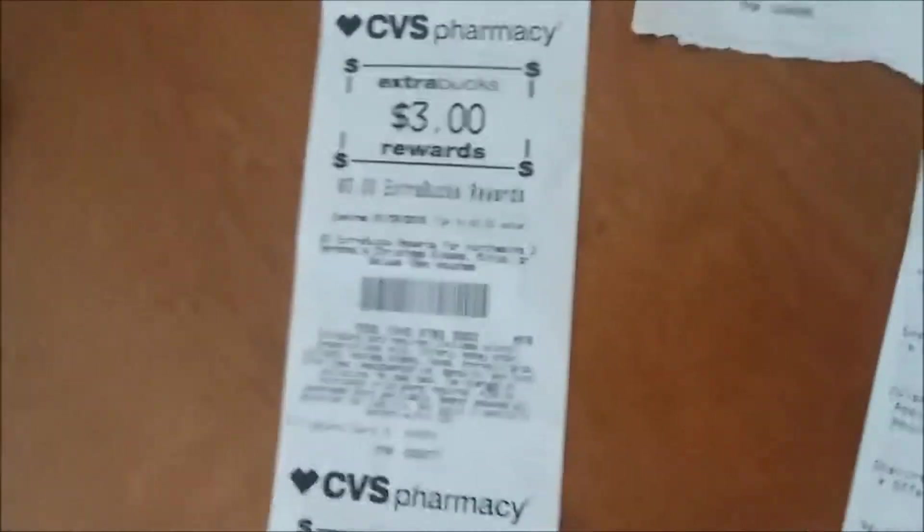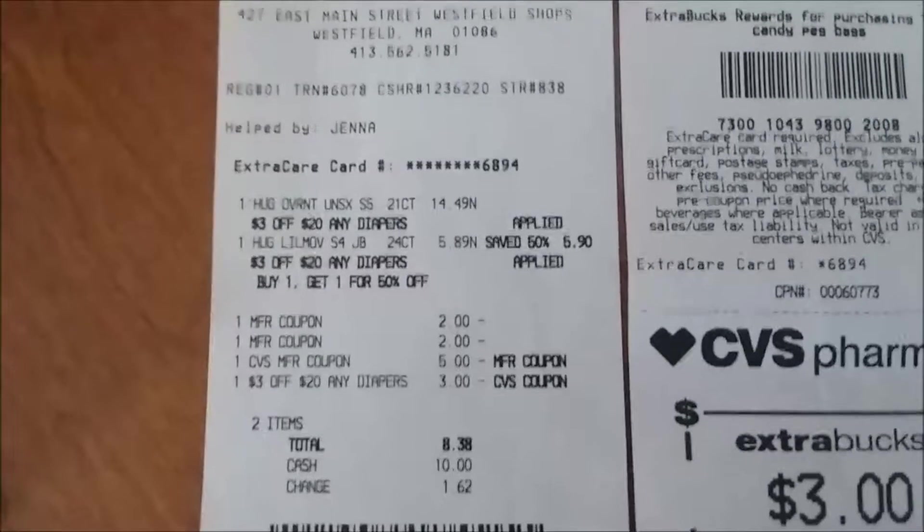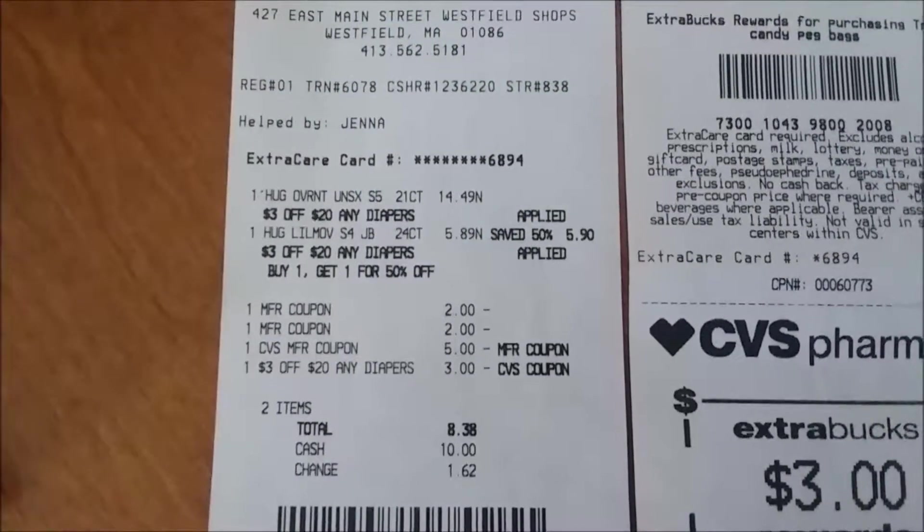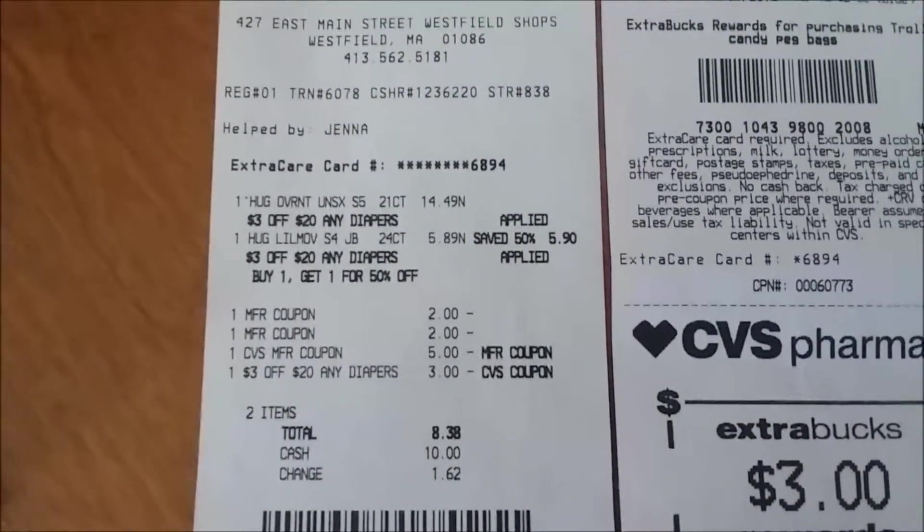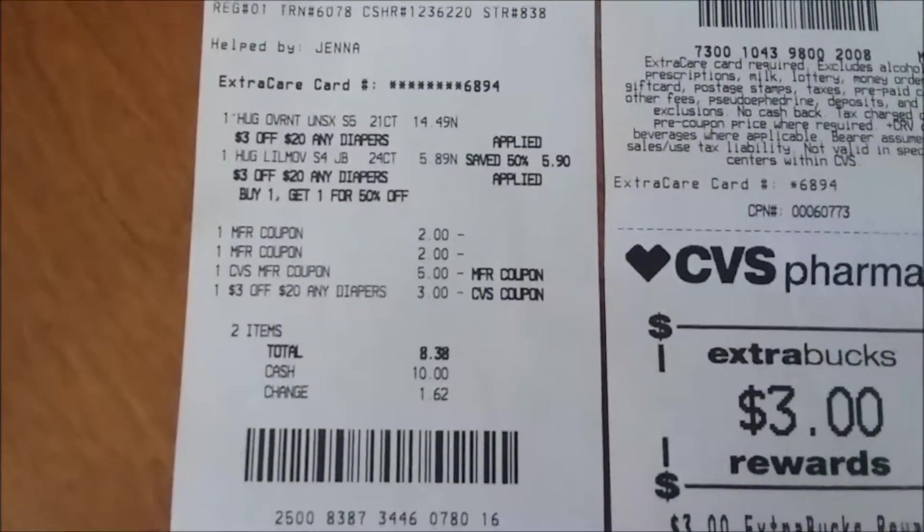I had another $5 for getting the Colgate toothpaste but I had to roll that $5 to buy diapers. I bought diapers after, here's the receipt right here. I picked up two Huggies, they're on sale for buy one get one half off. When you spend $20 you're gonna get $5 ECBs. I picked up one for $14.49 and I picked up another for $5.89. I used two $2 coupons from the Huggies website.